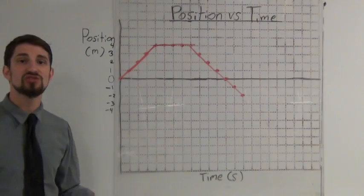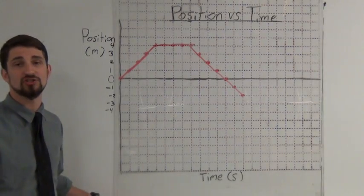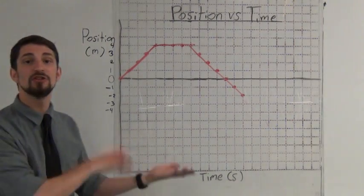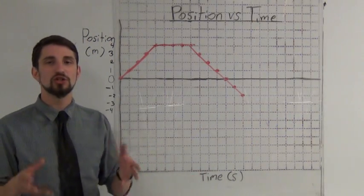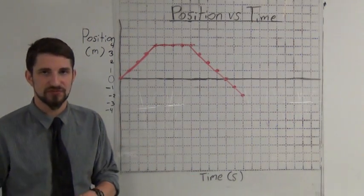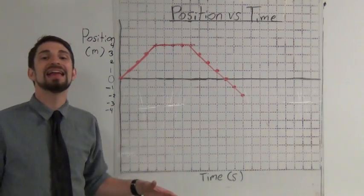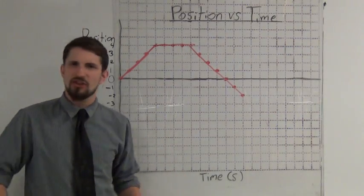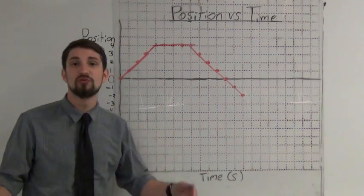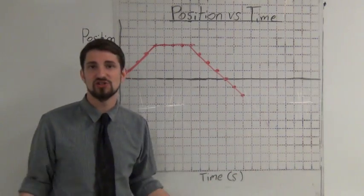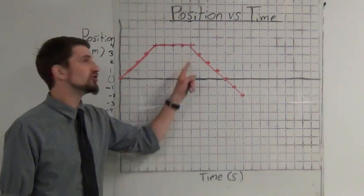Notice we've been doing a position versus time graph. If we decided to do a distance versus time graph instead, there would be no negative motion — there is no negative motion with distance. To translate a position versus time graph into a distance versus time graph, we'd take the negative displacement and turn it into positive distance.